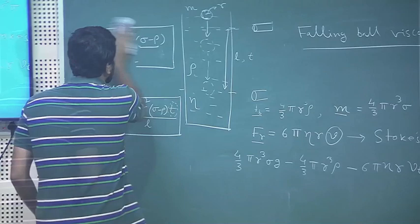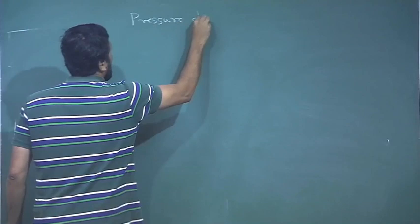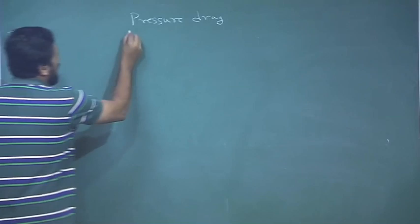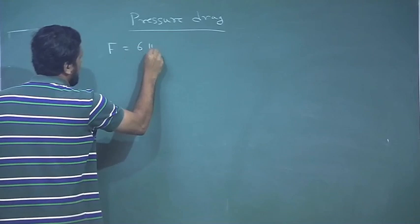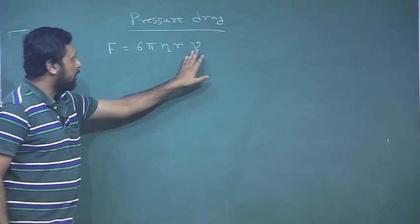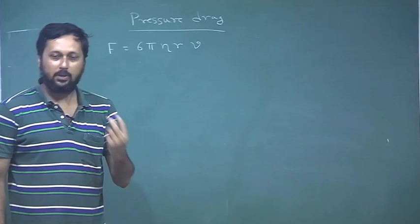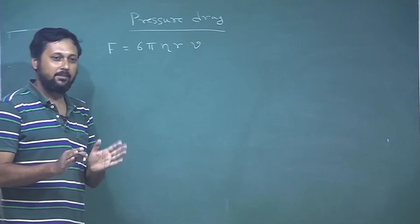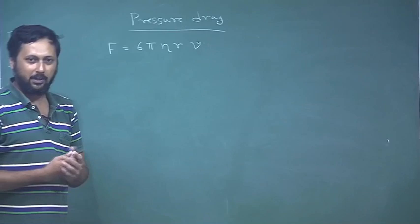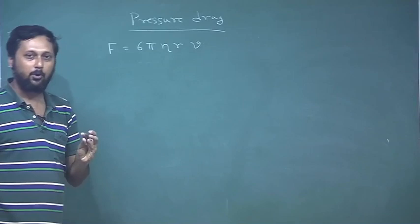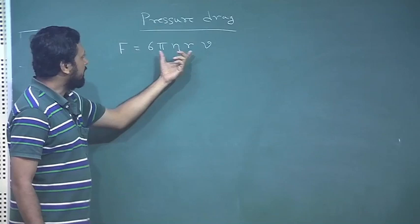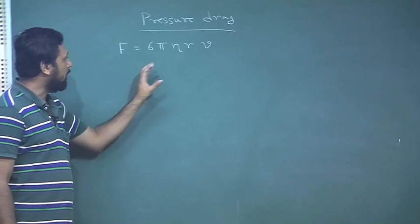Now, viscous drag expression f_v = 6πηrv is valid for a well-shaped object moving slowly enough inside the fluid. There are limits on v in terms of the Reynolds number; as a thumb rule, if it is a well-shaped small object moving with a limited speed, Stokes' law is a good approximation of the drag.